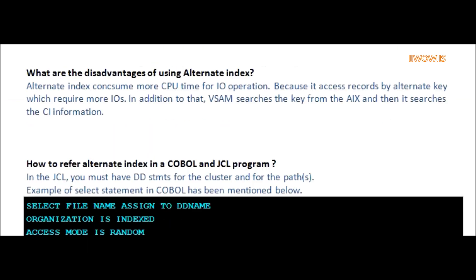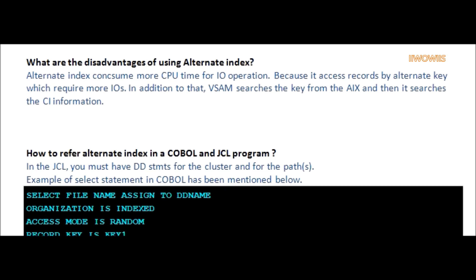Question: What are the disadvantages of using an alternate index? Answer: Alternate index consumes more CPU time for I/O operations, because it accesses records by alternate key which requires more I/O. In addition, VSAM searches the key from the alternate index and then searches the control interval information.